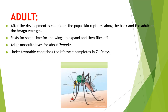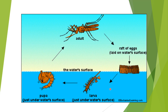Then comes the adult stage. After development is complete, the pupal skin ruptures along the back, and the adult — also called the imago — emerges. It usually rests for some time for the wings to expand, and then flies off. It lives for about two weeks, depending on climatic conditions. Under favorable conditions, the whole life cycle of the mosquito is completed in seven to ten days. The egg, larva, and pupa stages of the mosquito life cycle are in water, while the adult emerges in the air or on land.